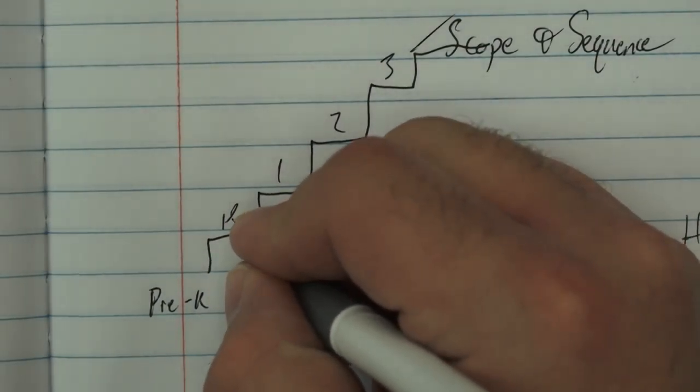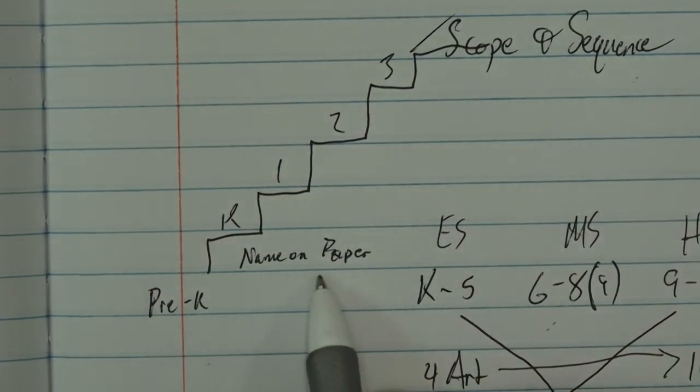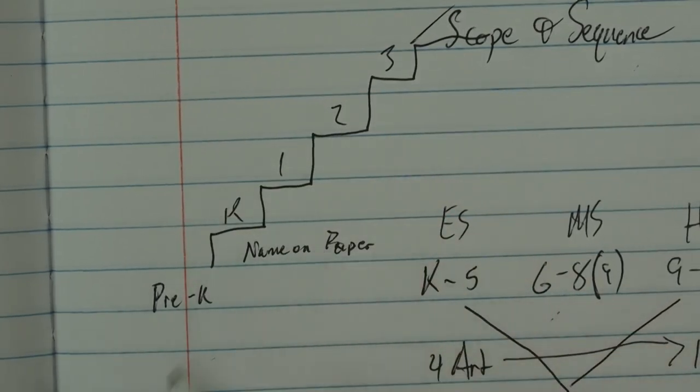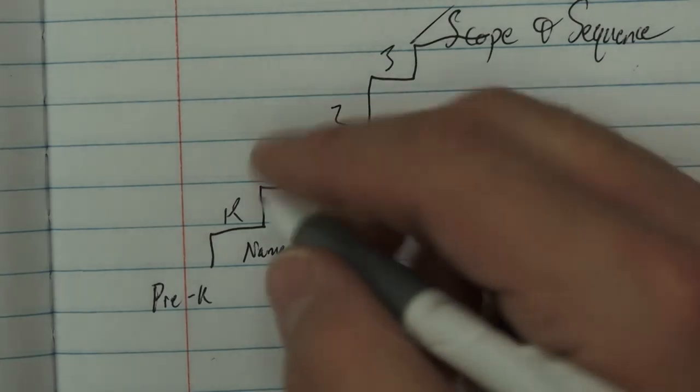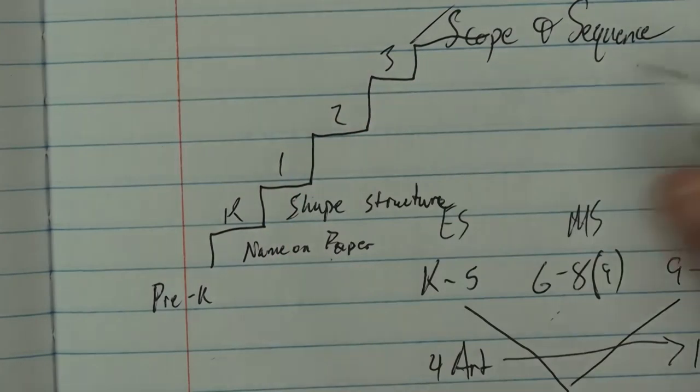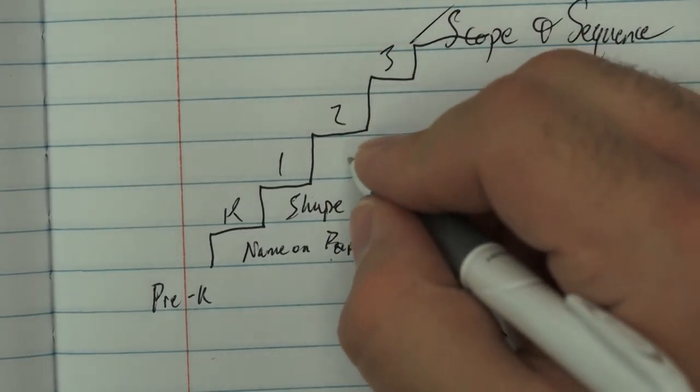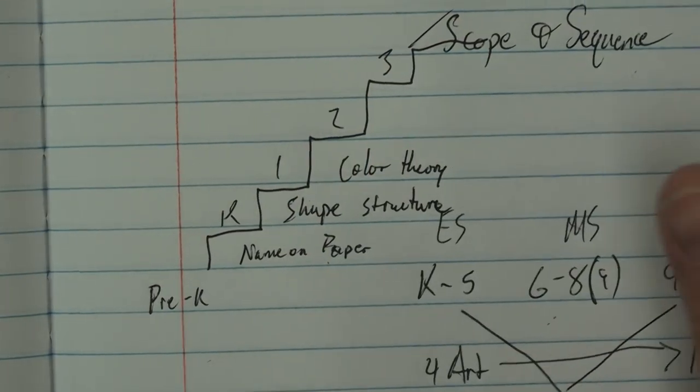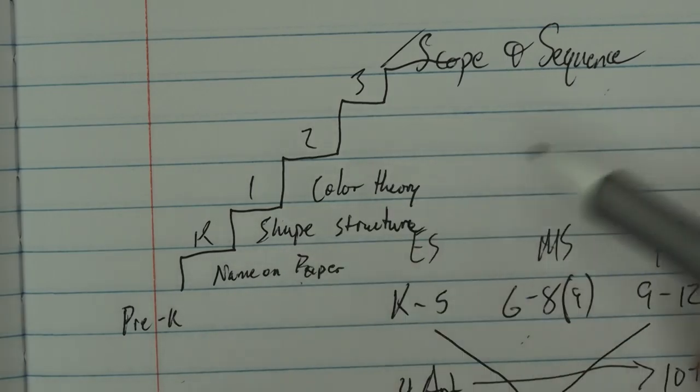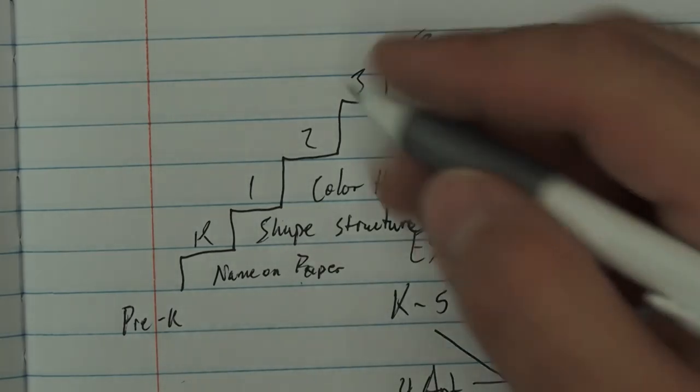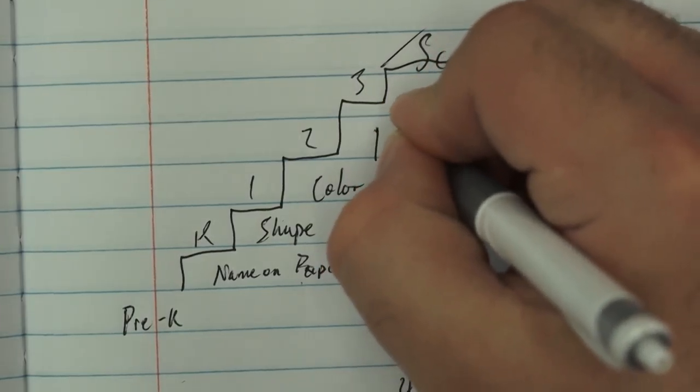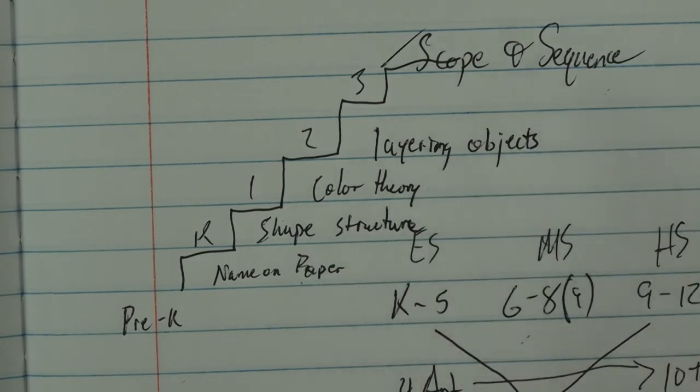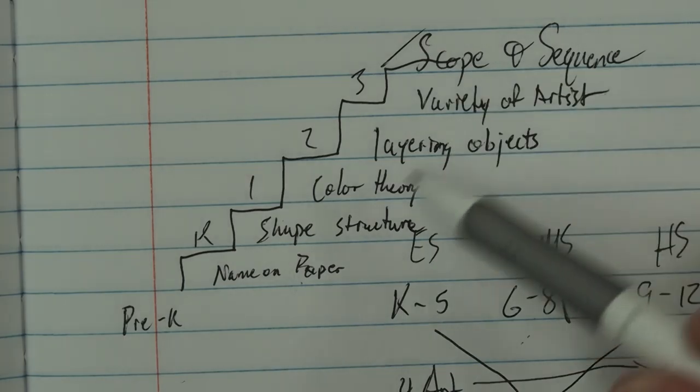Back to scope and sequence: what are we learning in kindergarten that's going to transfer us from kindergarten to first grade? Name on paper - I'm really going to harp on this because I've got high schoolers who forget to do this, and I think if it was done more here that might help. Name on paper, two: let's work on shape structure up into color theory. You might want to change these up - these are really just spitballing off the top of my head, but you can see a progression in what we're trying to do. Name on paper, shape structure, color theory, to layering objects.